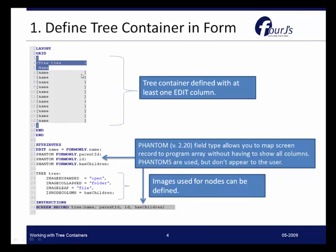Notice that it has only one column. That column has to be an edit column and it's simply going to display the text and information about that particular node in the tree. Down below you'll see that the additional fields are defined here: the parent ID, the ID, and has children. There is a new form type called phantom, which allows you to define a field but not show it to the user. The screen record is for this tree container and has all four of those fields defined as part of it, but only one of them is going to show — the other three are phantom.